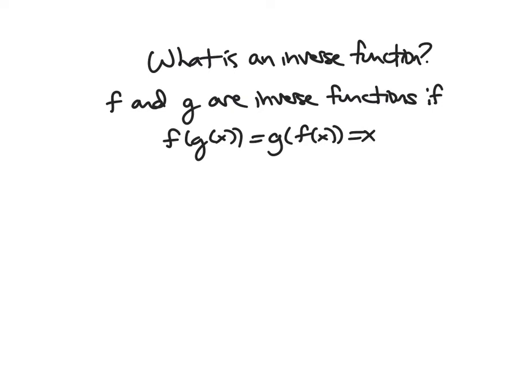So if I plug something into g, I get some output, right? So let's say g of one is three, then this means that f of three is going to be one. And so then f of g of one gives me one back, for instance.